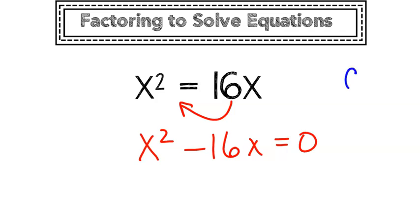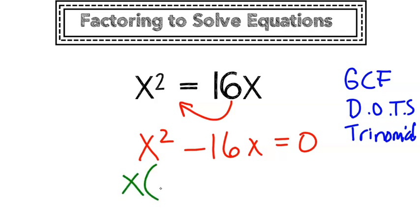Using one or multiple possible solutions, I can factor out a GCF, I can factor a difference of two squares, or I can factor a trinomial. In this case, I only have a GCF.